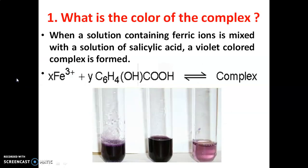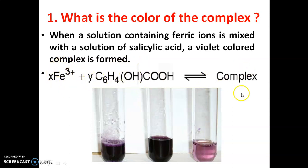The first question: what is the color of the complex? When a solution containing ferric ions is mixed with a solution of salicylic acid, a violet colored complex is formed. So in this experiment, when we mix Fe3+ ions with salicylic acid, we get a violet colored complex.